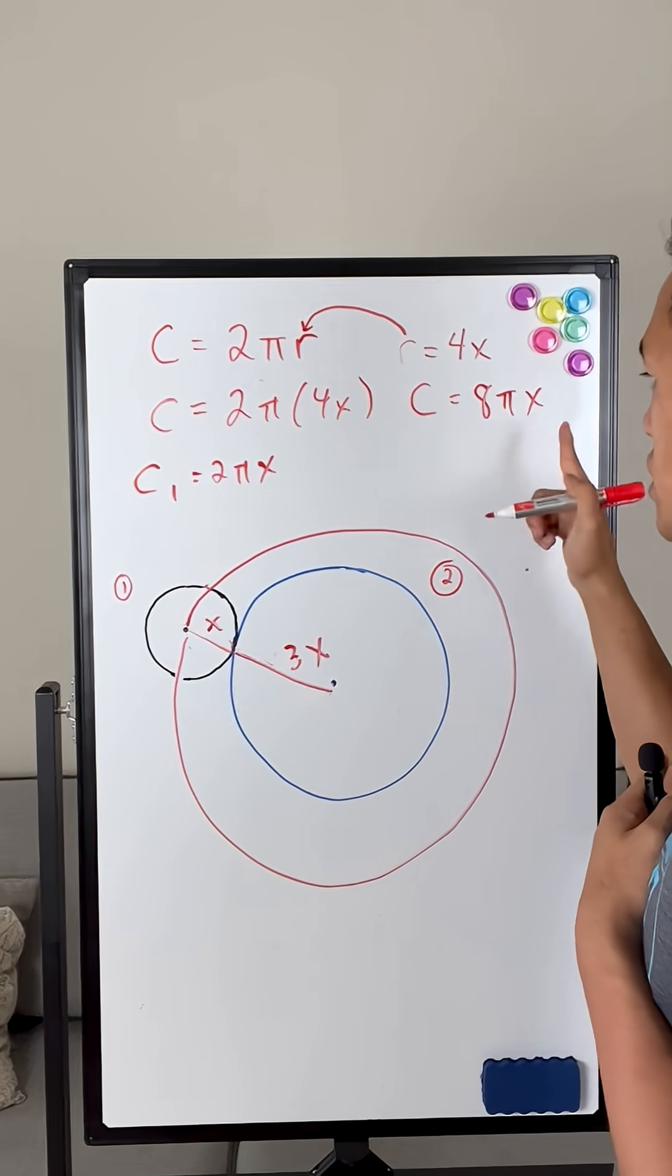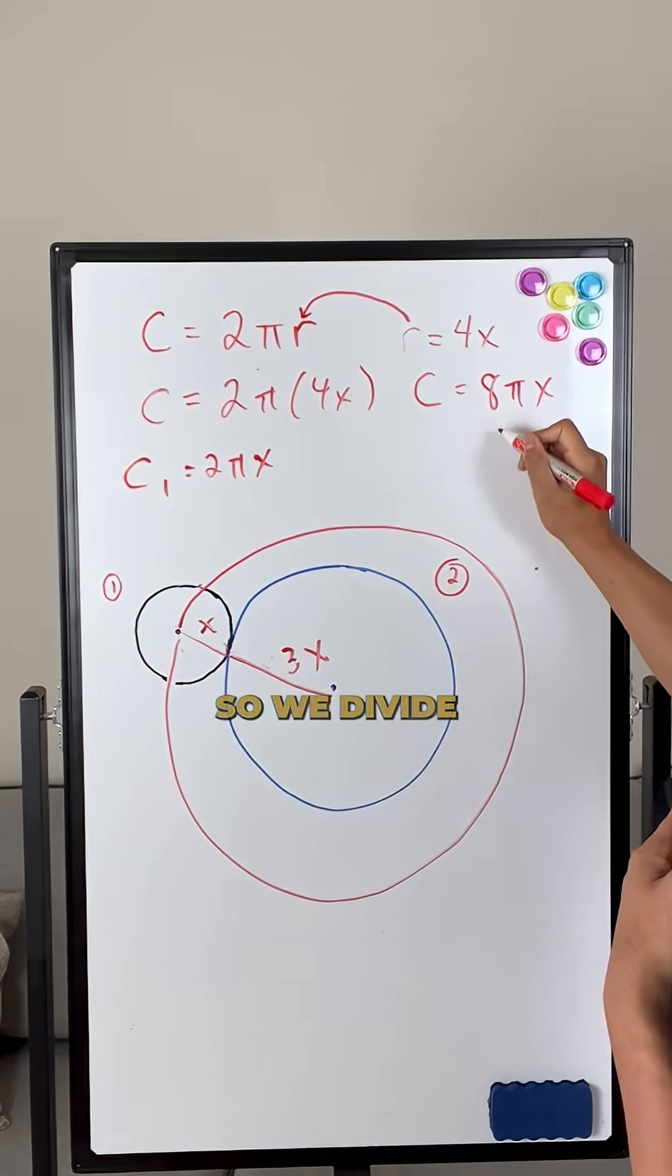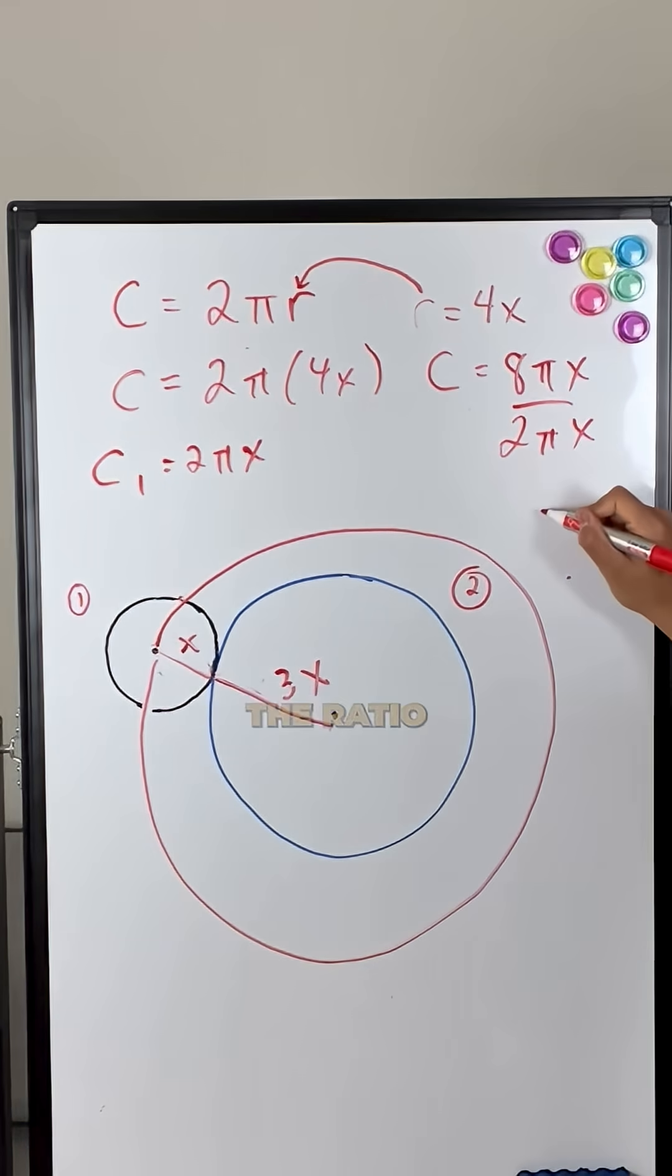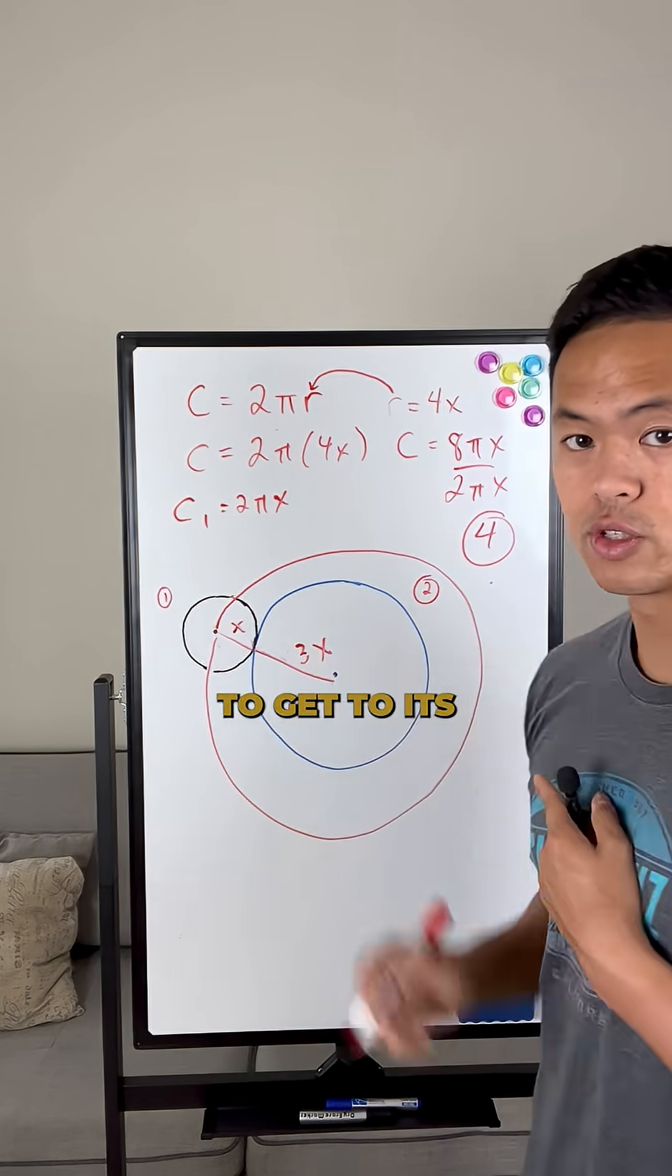All we need to do is take the circumference of the red circle and divide it by the circumference of the small circle. So we divide this by two pi times X, and you're going to get the ratio is equal to four. So that means it takes four revolutions to get to its original spot.